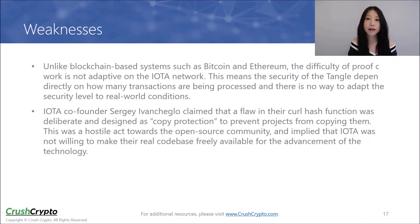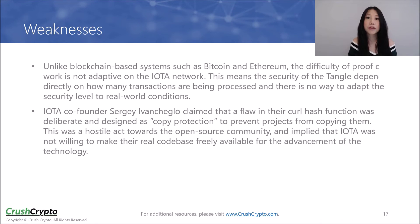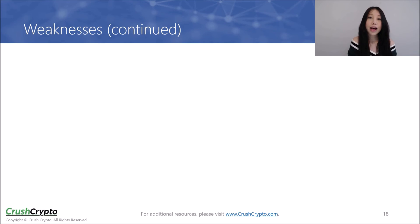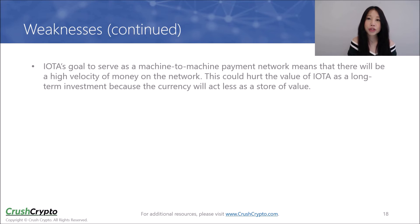IOTA's co-founder claimed that a flaw in their curl hash function was deliberate and designed as copy protection to prevent projects from copying them. This was a hostile act towards the open-source community and implied that IOTA was not willing to make their real code base freely available for the advancement of the technology. IOTA's goal to serve as a machine-to-machine payment network means that there will be a high velocity of money on the network, which could potentially hurt the value of IOTA as a long-term investment as the currency will act less as a store of value.